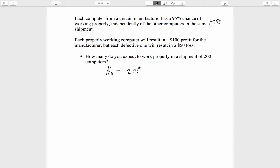Here the number of trials equals 200, and the probability of success on each trial equals .95, so that means that on average we expect 190 computers to work properly.